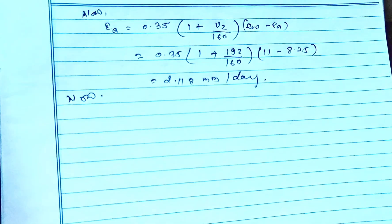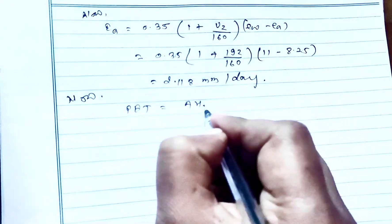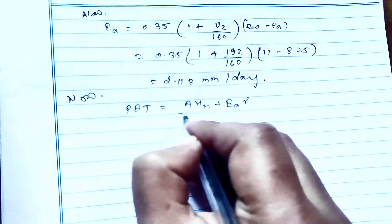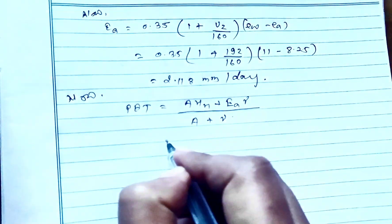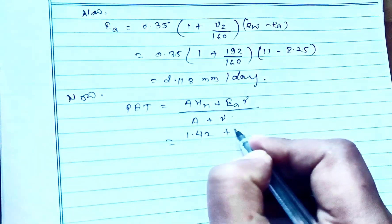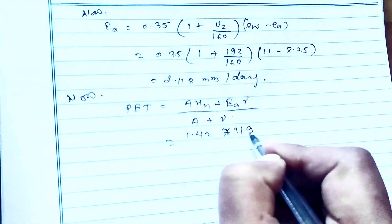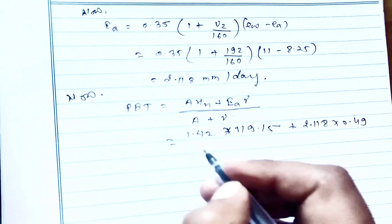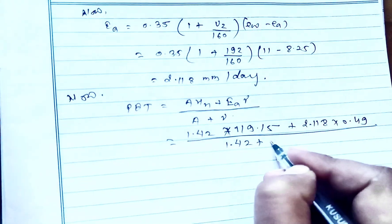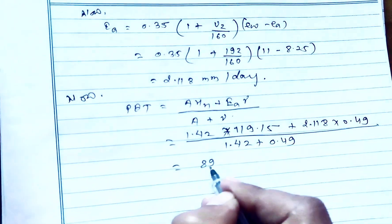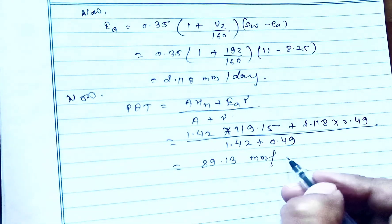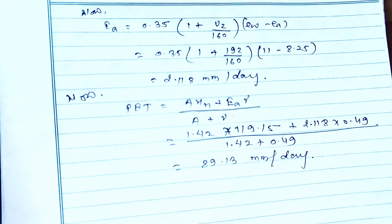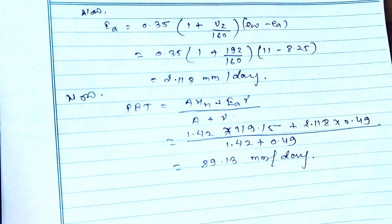Now the PET equals (A × Hn + Ea × γ) divided by (A + γ), which equals (1.42 × 19.15 + 2.118 × 0.49) divided by (1.42 + 0.49), giving a final answer of 89.13 mm per day. This is the final result for the given data. For this time we end the video here. We will come again with a new video — till then keep watching our channel and don't forget to subscribe. Thank you.